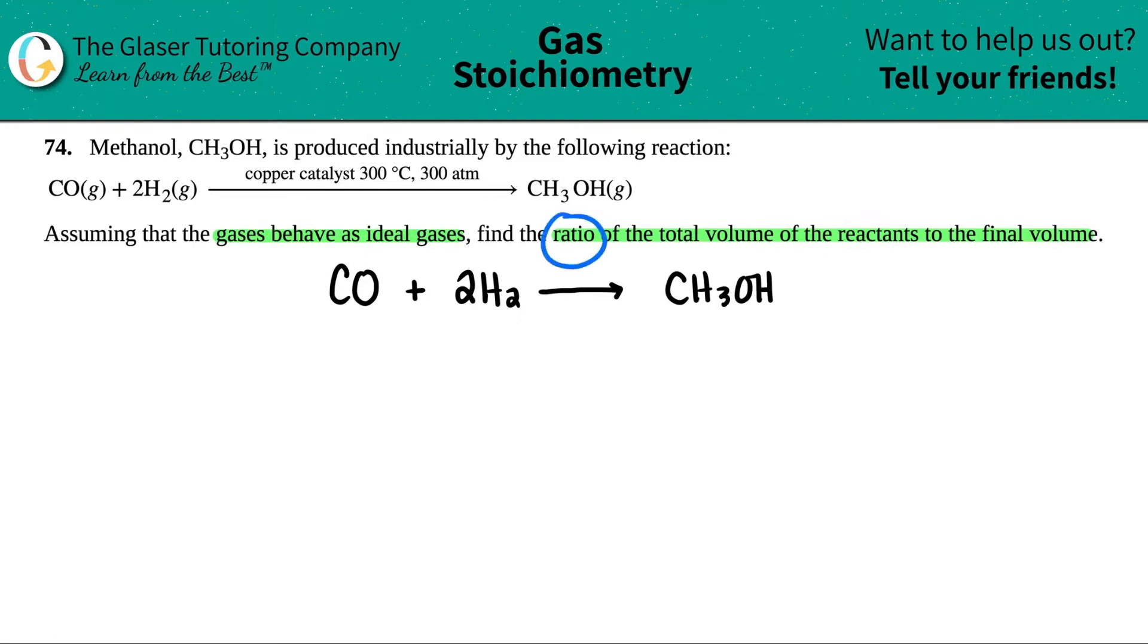Well, we've seen ratios time and time again, right? A ratio is basically just something divided by something else. There's something in the top, and then divided by something in the bottom. Now, they're just being very specific. They're saying that we need to find the ratio of the total volume of the reactants. And that was said first when they talked about a ratio.